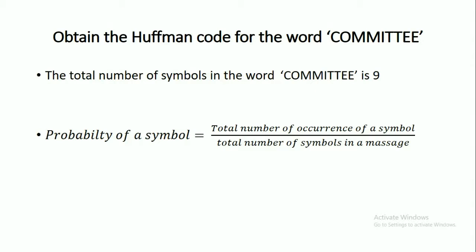I am explaining Huffman code by considering an example. The example is: obtain the Huffman code for the word 'committee'. So for this word 'committee', how do we generate the Huffman code?